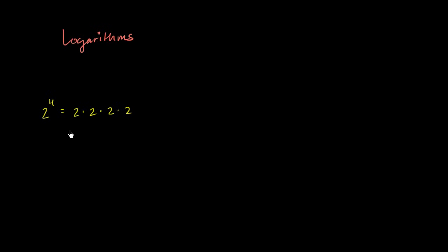2 multiplied, or repeatedly multiplied, 4 times. And so this is going to be 2 times 2 is 4, times 2 is 8, times 2 is 16.